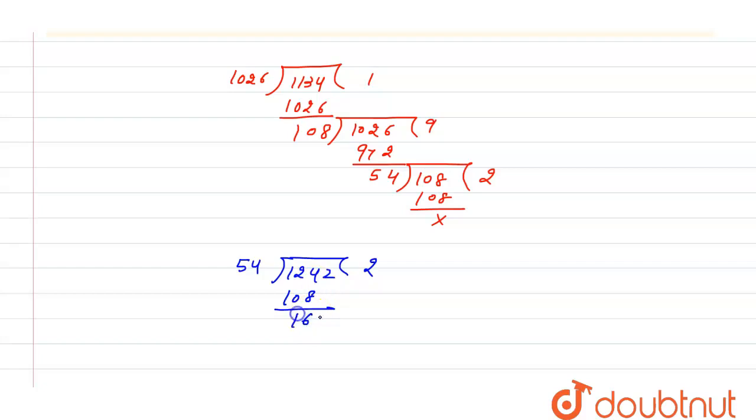So now, if we multiply 54 by 3, we will get 162. So 54 into 3 will be 162. So the HCF of these numbers is 54.